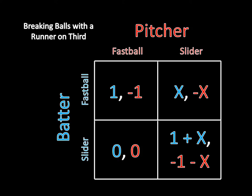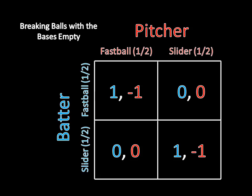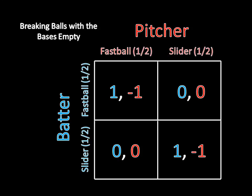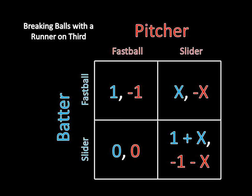Now we want to look at this with a runner on third base. With a runner on third, I've added X to the batter's payoff whenever the pitcher throws a slider, and subtracted X from the pitcher's payoff whenever the pitcher throws a slider. The idea is that there's some risk the ball will go past the catcher, the runner scores from third — hurting the pitcher and benefiting the batter.